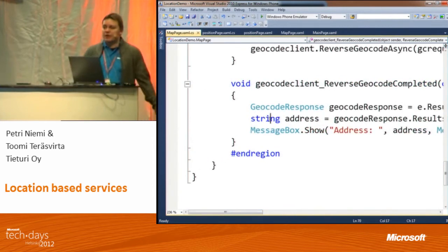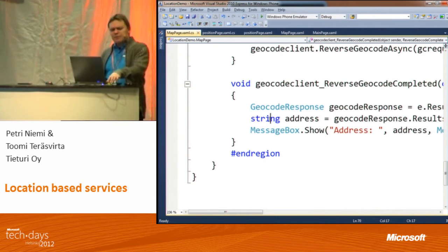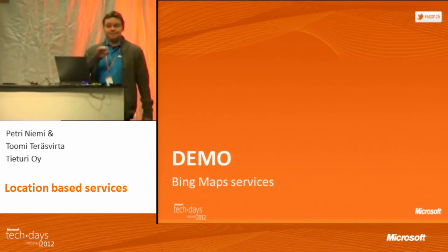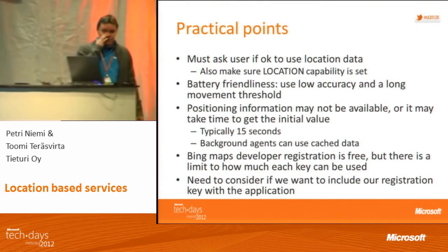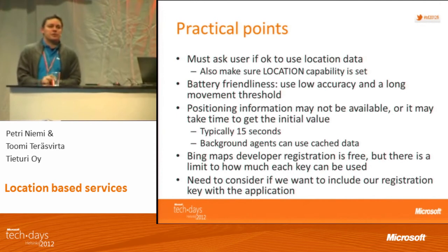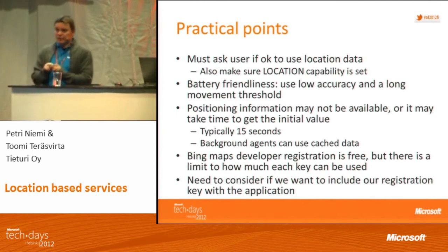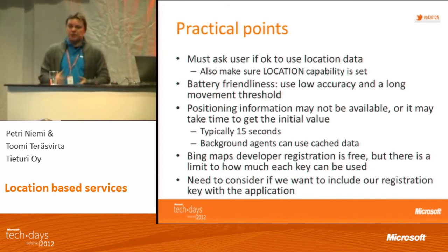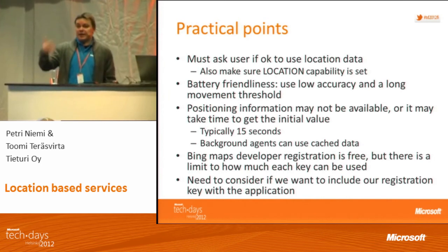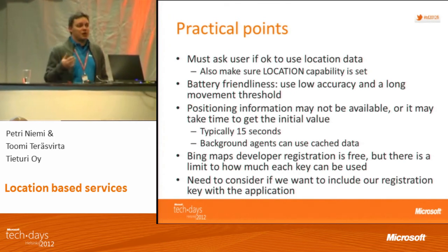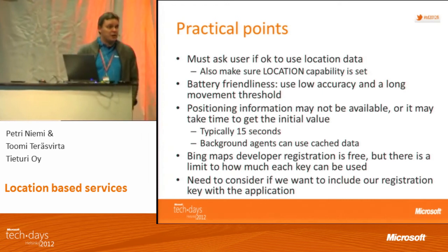That was the demonstration. We have about five minutes left. A couple of practical points: like Petri said, you need to ask the user for permission to use location data — you need to do it once. The first time you launch your application, ask the user. If they say okay, store that setting. The next time you launch it, you don't have to ask anymore. But you still need to ask it, otherwise you don't pass the validation to get your application submitted to the marketplace.